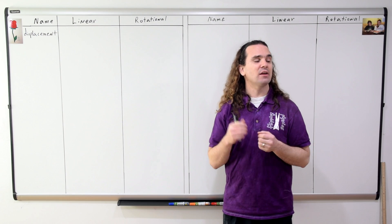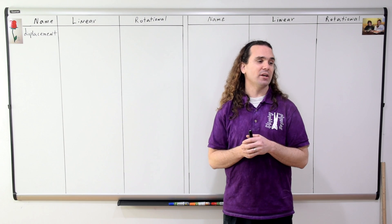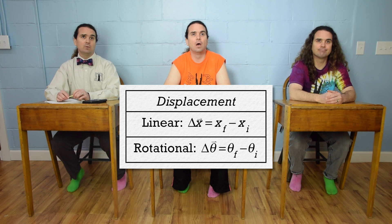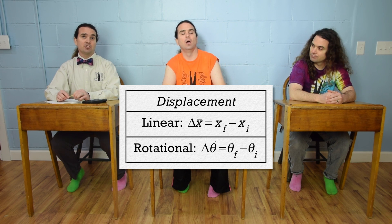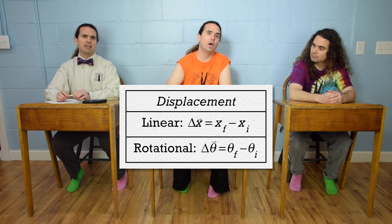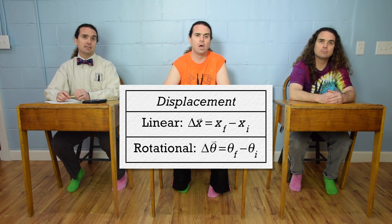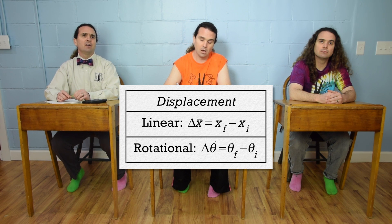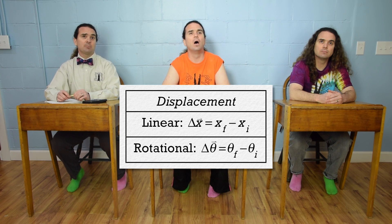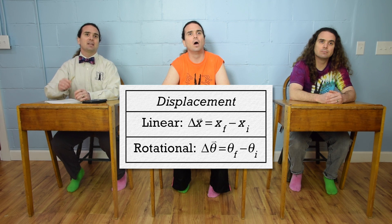Billy, what are the linear and rotational equations for displacement? Displacement is change in position, which equals position final minus position initial. For linear position, the symbol is sometimes x, it could be y, z, or sometimes r. For angular position, the symbol is theta, and displacement is a vector.